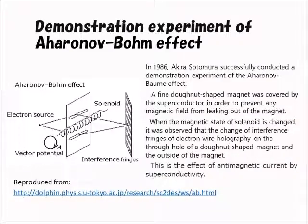In 1986, Akira Tonomura successfully conducted a demonstration experiment of the Aharonov-Bohm effect. A fine donut-shaped magnet was covered by a superconductor in order to prevent any magnetic field from leaking out of the magnet. When the magnetic state of the solenoid was changed, it was observed that the interference fringes of electron wave holography changed on the through-hole of the donut-shaped magnet and on the outside of the magnet.